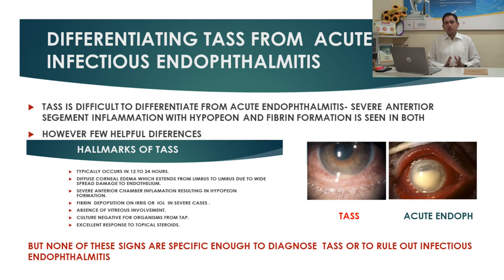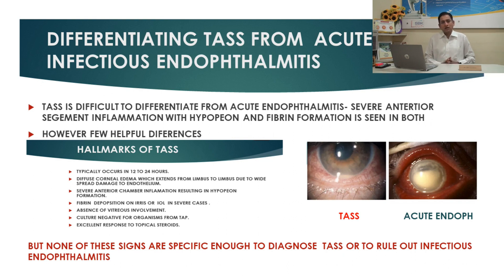However, there are certain clinical features which can definitely differentiate TASS from infectious endophthalmitis — these are called the hallmarks of TASS: onset within 12 to 24 hours, limbus-to-limbus corneal edema, vitreous relatively clear, and dramatic response to steroids.